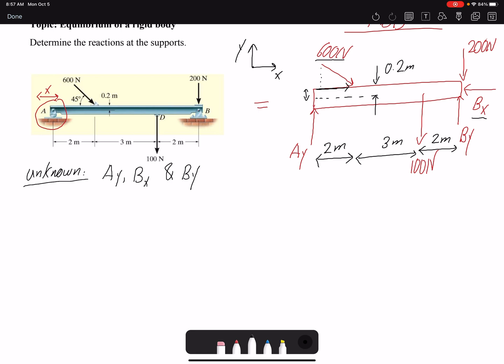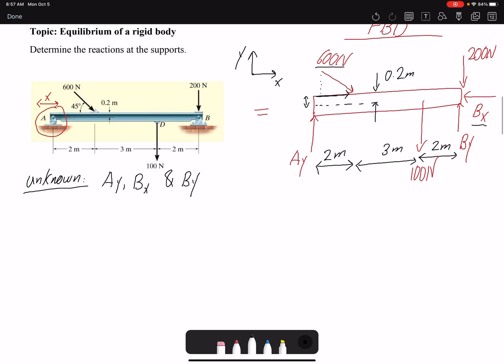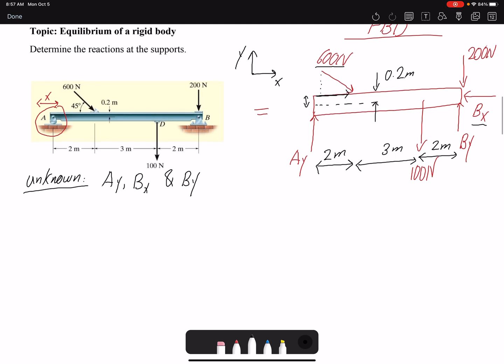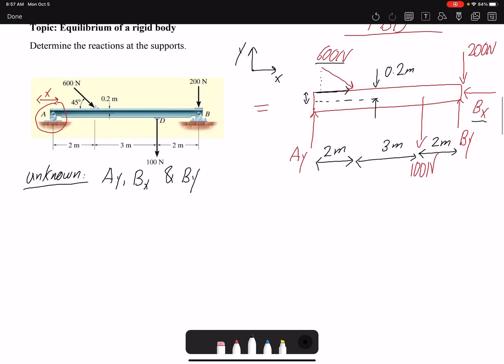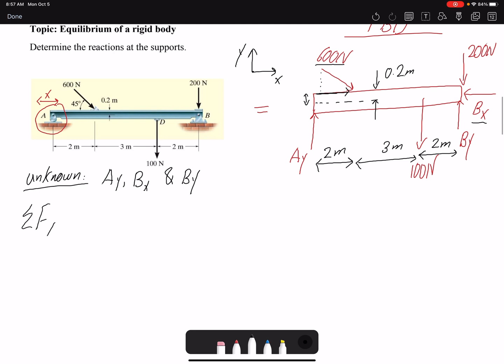I start with summation of forces in the x direction equals zero. I have 600 newtons here. It's going to have a component in x, so that would be 600 cos 45° toward positive x based on my coordinate. The problem didn't have a coordinate, so I have a choice to draw my own. Minus Bx equals zero. Therefore Bx would be 300√2 newtons.